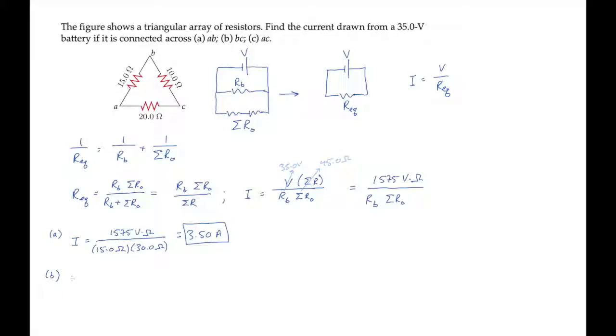In part B, the battery is across the 10 ohm resistor, and the others sum to 35 ohms, so we find a current of 4.5 amps.